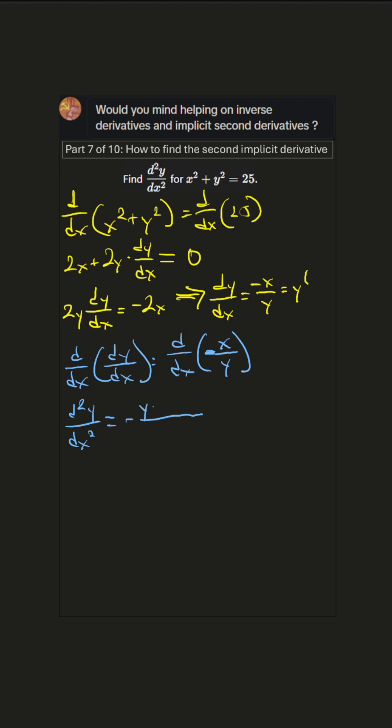So that's y times the derivative of x minus x times the derivative of y all over the denominator squared.